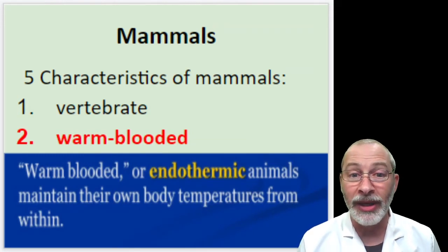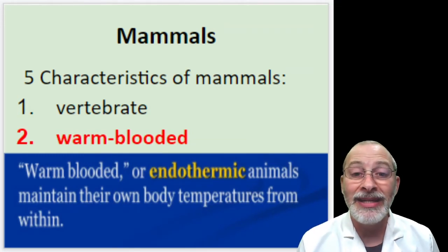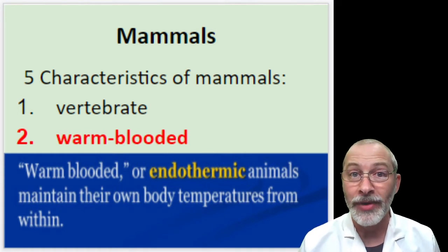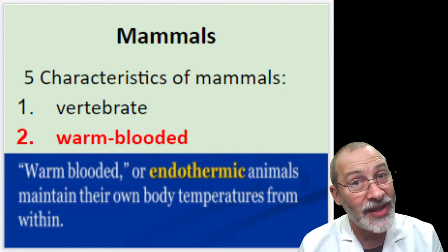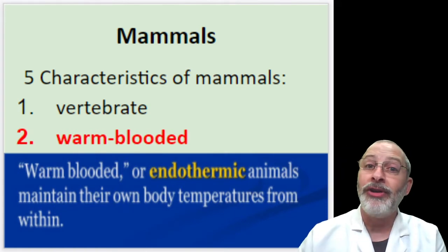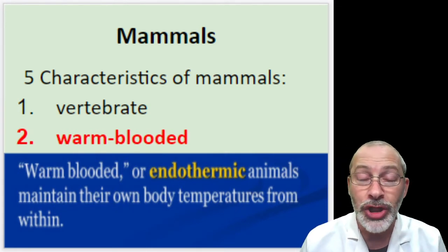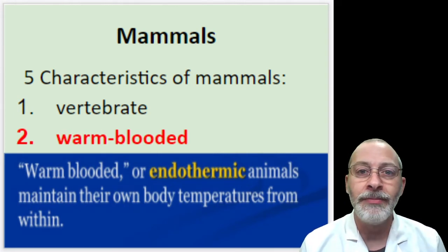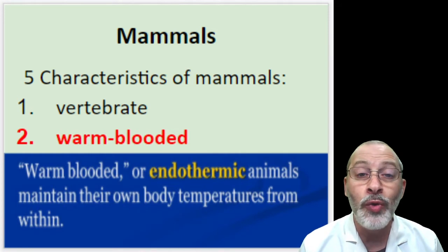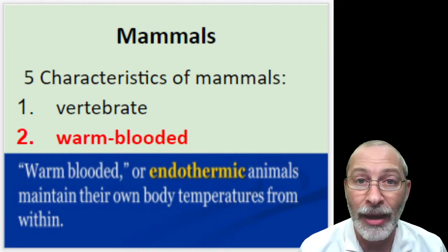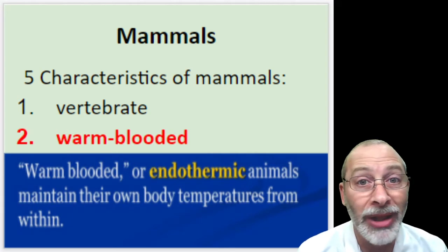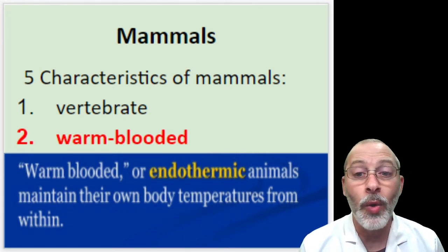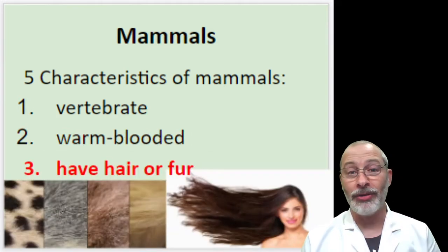All mammals are endothermic, which means that they maintain their own body temperature from within. The prefix 'endo' means inside, and 'thermic' refers to heat energy or temperature. So endothermic organisms regulate their own internal body temperature. There are no cold-blooded mammals — all mammals are warm-blooded or endothermic.